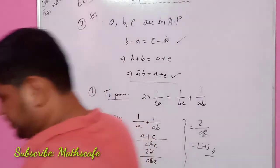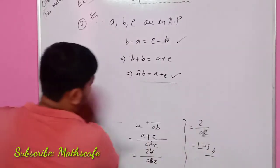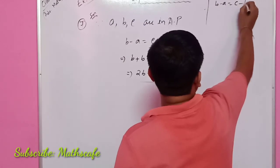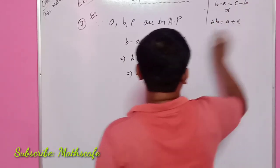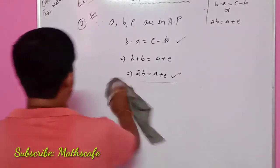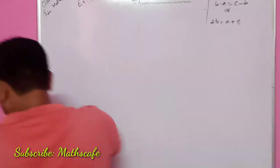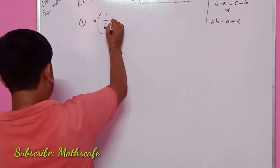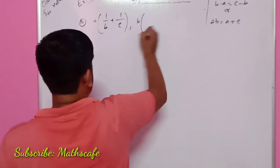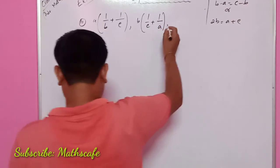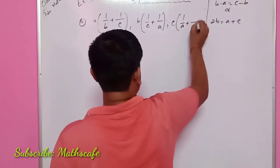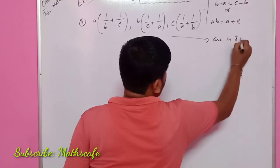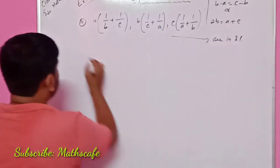Next question number 2. This is a question. The condition is B minus A equals C minus B, and 2B equals A plus C. This is the condition. So I will use question number 2. I will write the question number 2: I will prove 1 by b(b+c), 1 by c(c+a), 1 by a(a+b) are in AP.